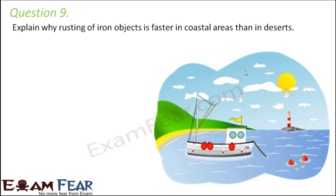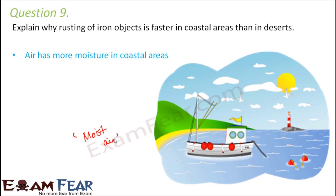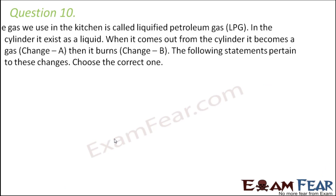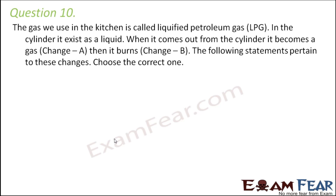Question number nine: explain why rusting of iron objects is faster in coastal areas than in deserts. In coastal areas, water bodies nearby cause a lot of moisture in the air. In deserts, there is hardly any water, so the air is very dry. The presence of moist air always increases the possibility of rusting. Air has more moisture in coastal areas than in deserts, so the chances of rusting are also higher there.